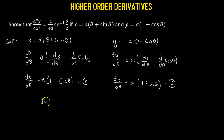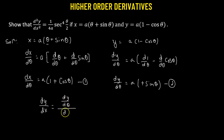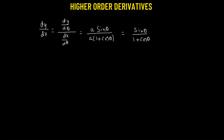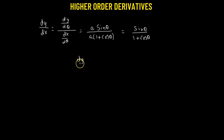To find dy/dx, we divide equation 2 by equation 1: dy/dx = (dy/dθ) ÷ (dx/dθ) = (a·sinθ) / (a(1 + cosθ)). The a's cancel, giving dy/dx = sinθ / (1 + cosθ).